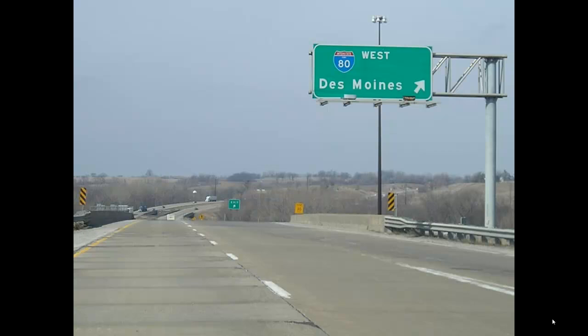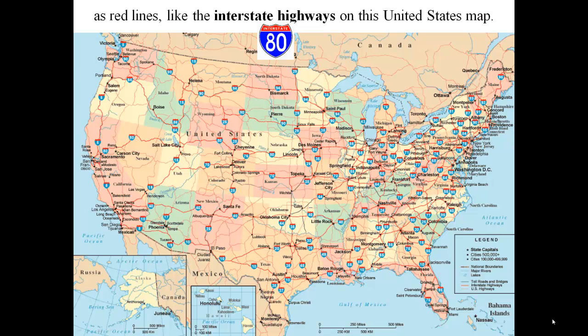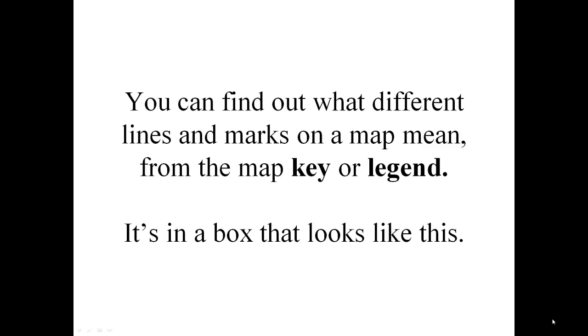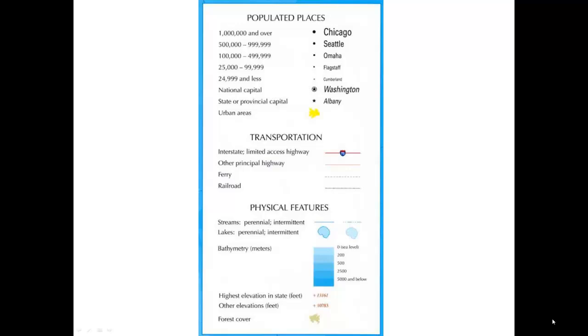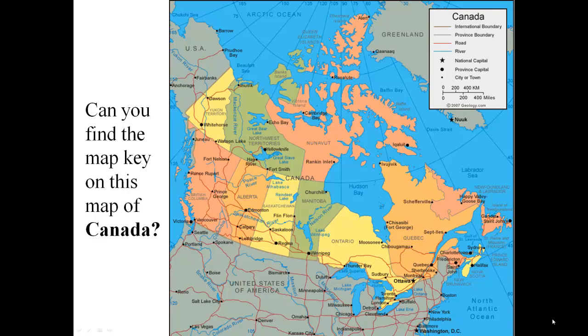Some maps show big highways as red lines, like the interstate highways on this United States map. You can find out what different lines and marks on a map mean from the map key or legend. It's in a box that looks like this. Can you find the map key on this map of Canada?